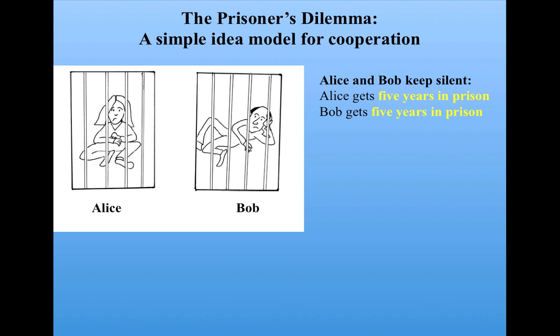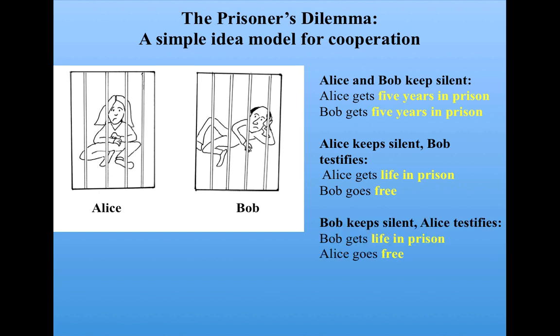Here's the deal. If neither of them testify, then the police are going to have to reduce the charge, and each one will get five years in prison. However, if Alice decides to keep silent but Bob decides to testify against her, Alice is going to get life in prison and Bob is going to go free. The same applies to Bob.